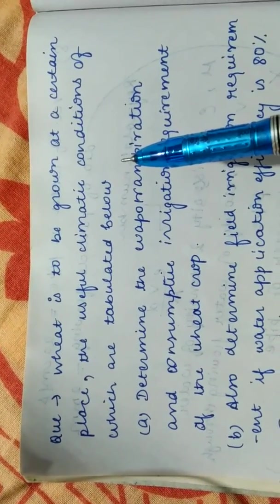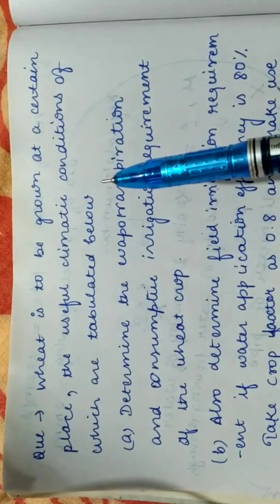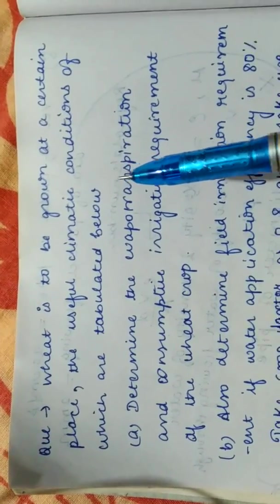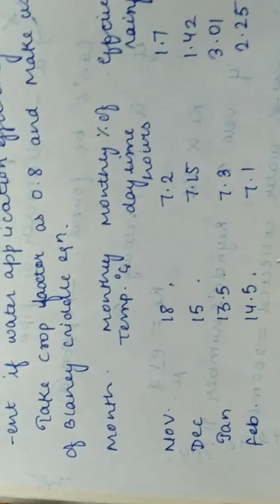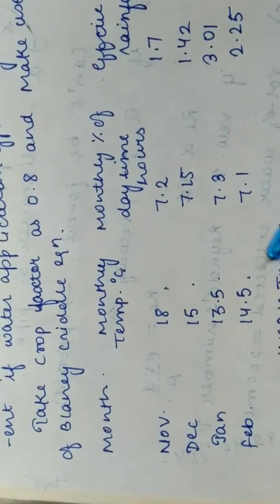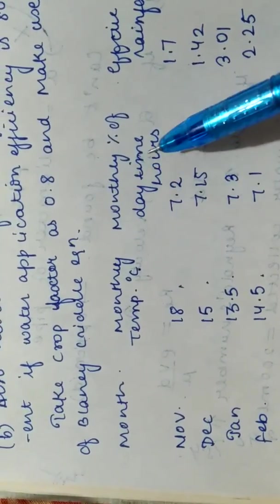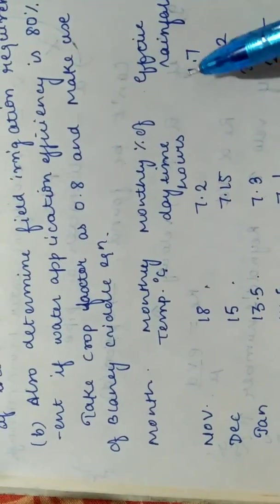So out of all that, for Blanek-Redel equation, what we need is temperature and sunshine hours. So for 4 months, that is from November to February, we have temperature, sunshine hours and effective rainfall.